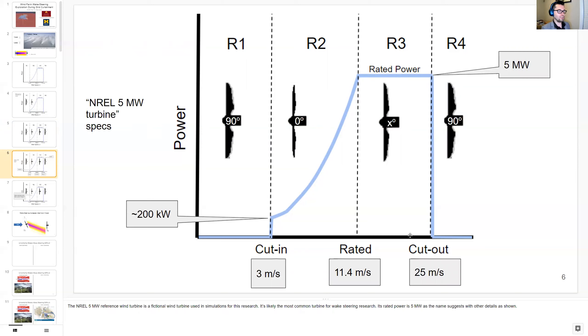The NREL 5 megawatt reference wind turbine is a fictional wind turbine used in simulations for this research. It's likely the most common turbine for wake steering research and its rated power is 5 megawatts as the name suggests.